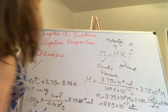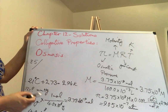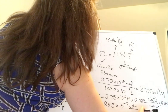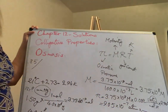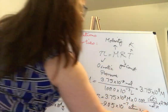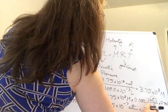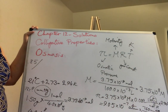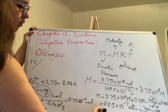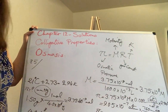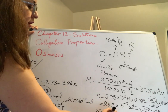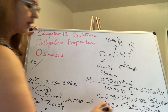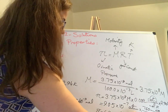Plug into the formula: pi equals 3.75×10⁻⁸ M times 0.0821 L·atm/mol·K times 294 K. This gives osmotic pressure = 9.05×10⁻⁷ atm. Since the question asks for mmHg, convert using 1 atm = 760 mmHg, giving pi equals 6.9×10⁻⁴ mmHg.